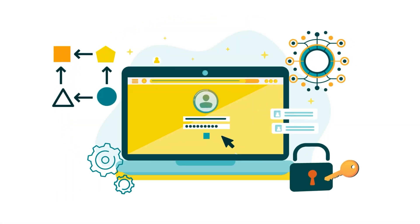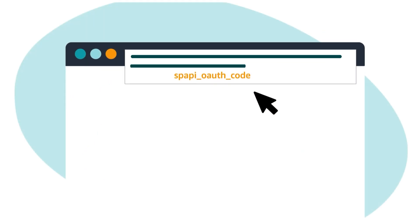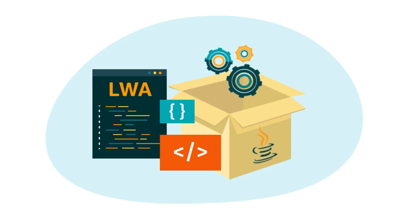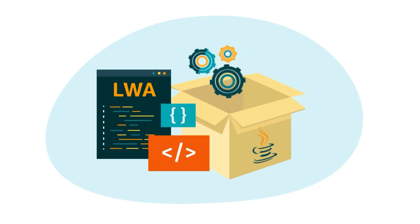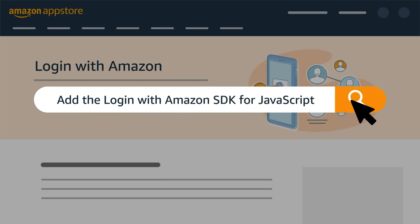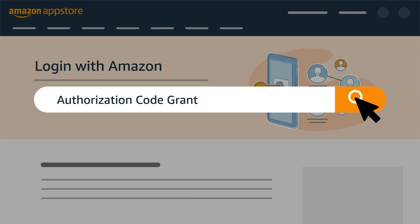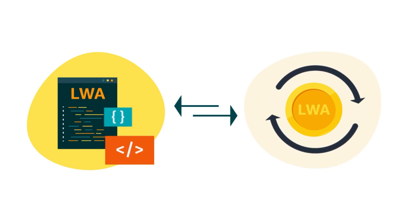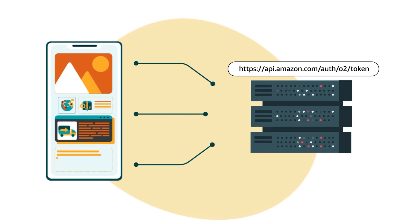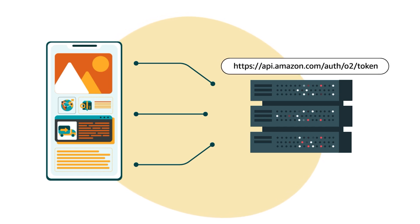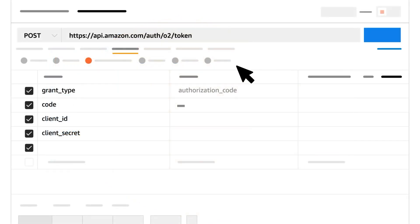Now let's review the last part of the test website authorization workflow: exchanging an LWA authorization code for a long-lived LWA Refresh Token. If you'd like to use the LWA SDK for JavaScript to help with the token exchange process, search for Login with Amazon, then search for Add the Login with Amazon SDK for JavaScript and Authorization Code Grant for more information. To initiate the exchange, have your application call the LWA Authorization Server. The call must include the query parameters: Grant Type, Code, Client ID, and Client Secret.